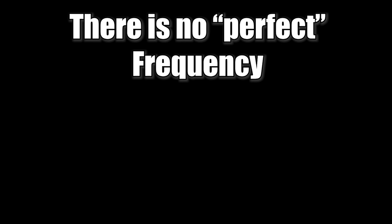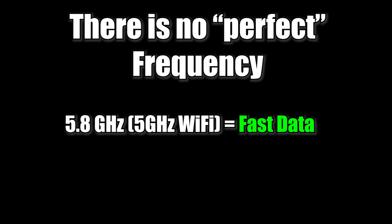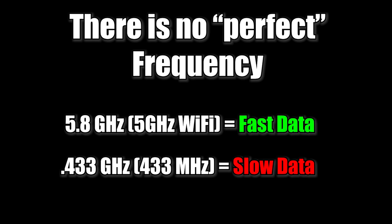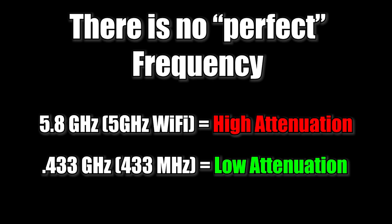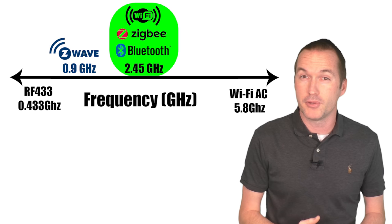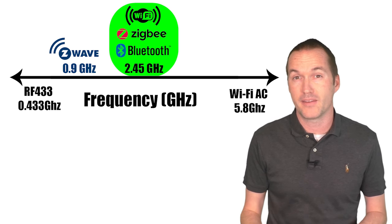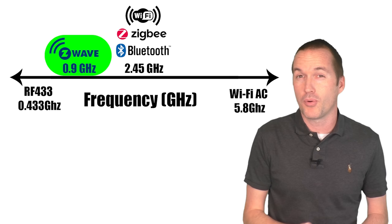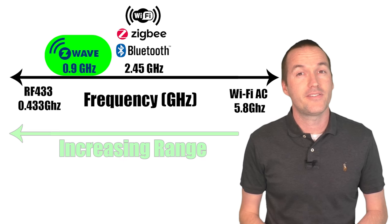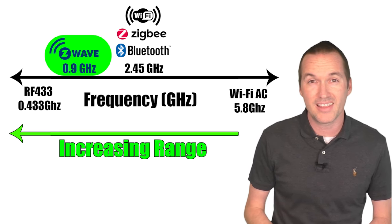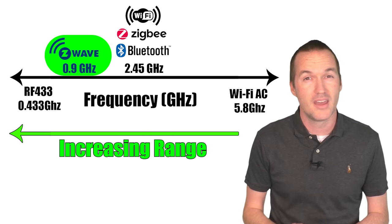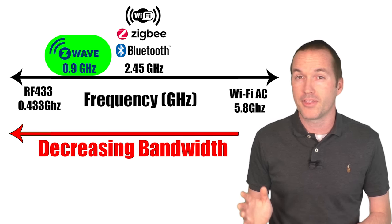The second reason frequency is important is that it affects the ability to transmit data. Higher frequency means higher bandwidth, or the ability to transfer more data in a shorter period of time. But lower frequencies have lower attenuation when traveling through solids, meaning they can pass through obstacles like walls without losing energy. Zigbee, WiFi, and Bluetooth all use the 2.45 gigahertz band, whereas Z-Wave uses the 0.9 gigahertz band. This means Z-Wave will have the greatest non-line-of-sight range between devices, but sacrifices some bandwidth.